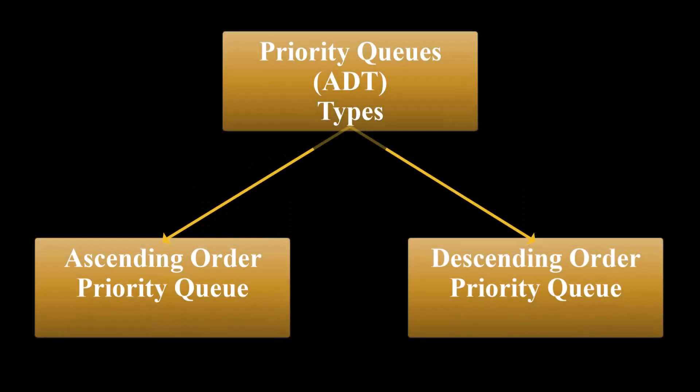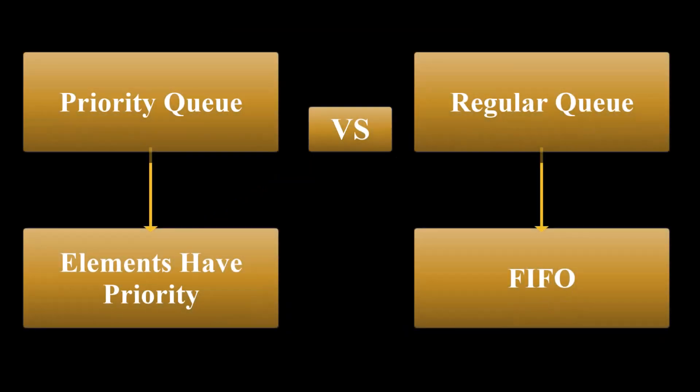There are two different types of priority queues: the ascending order priority queue and the descending order priority queue. The difference between priority queues and the regular queue is that there is no priority attached to elements in a regular queue. Regular queues go by the rule of FIFO, first in first out. Whereas in priority queues, the elements have priority and the elements with higher priority are served first.